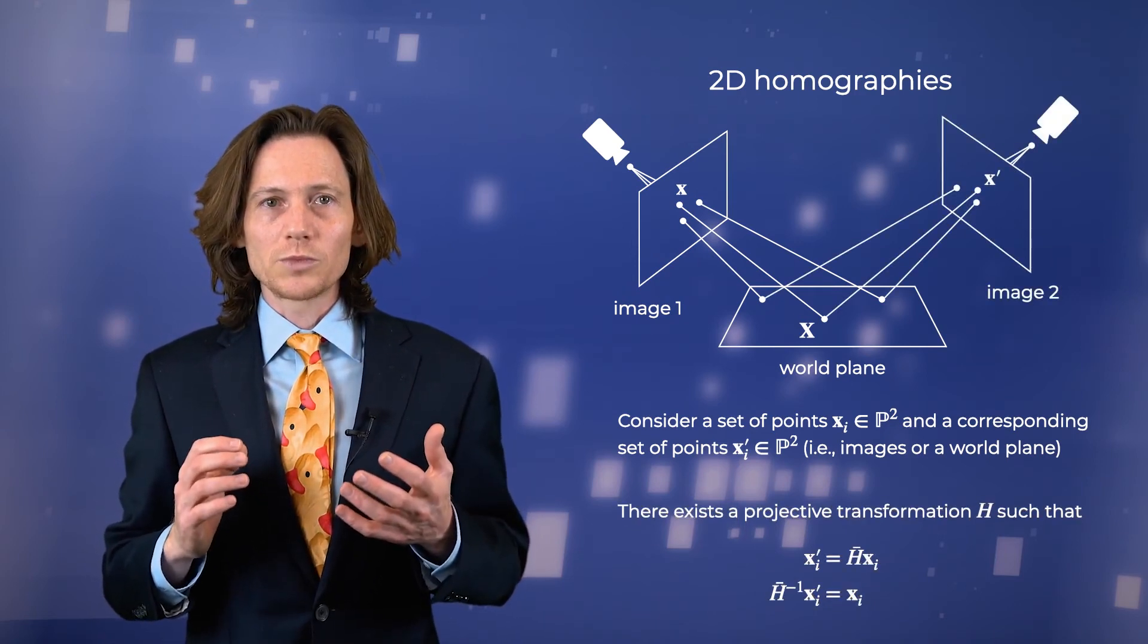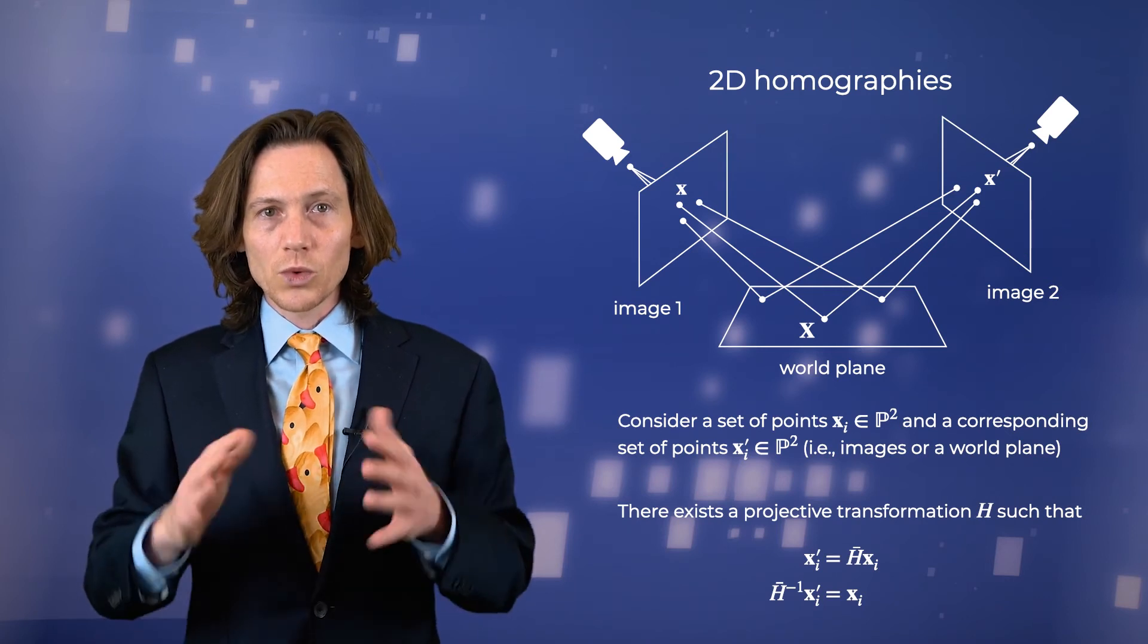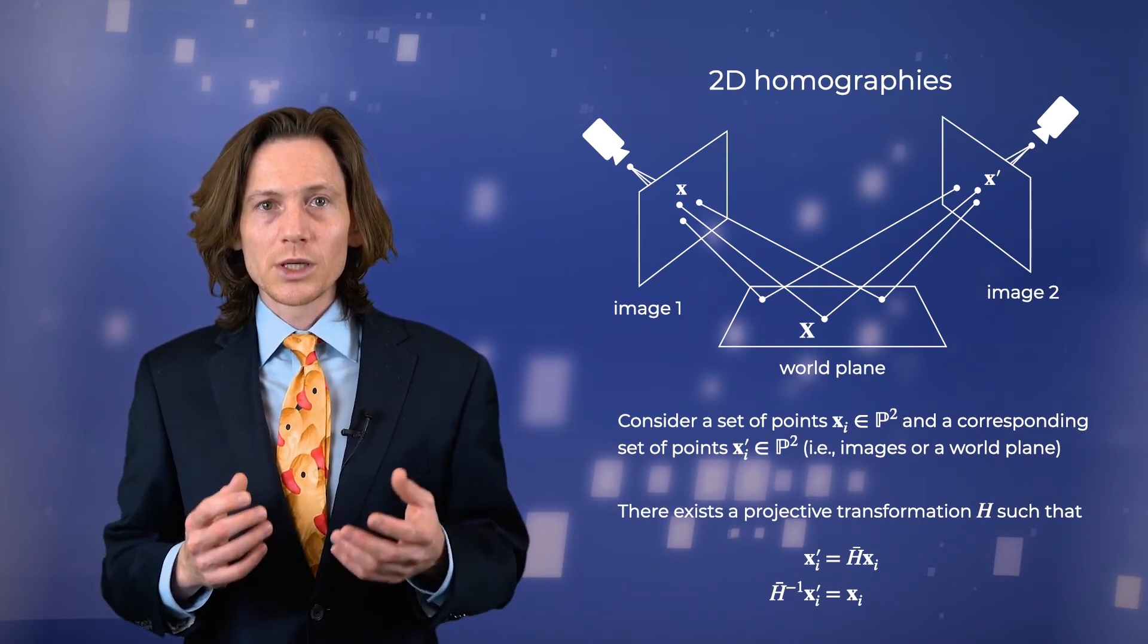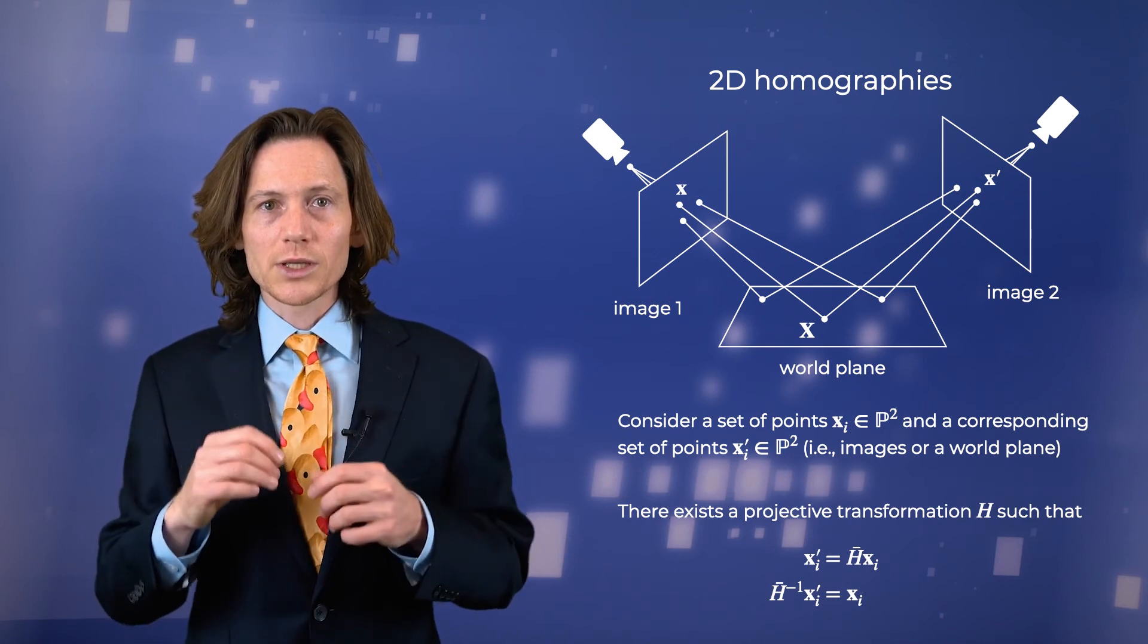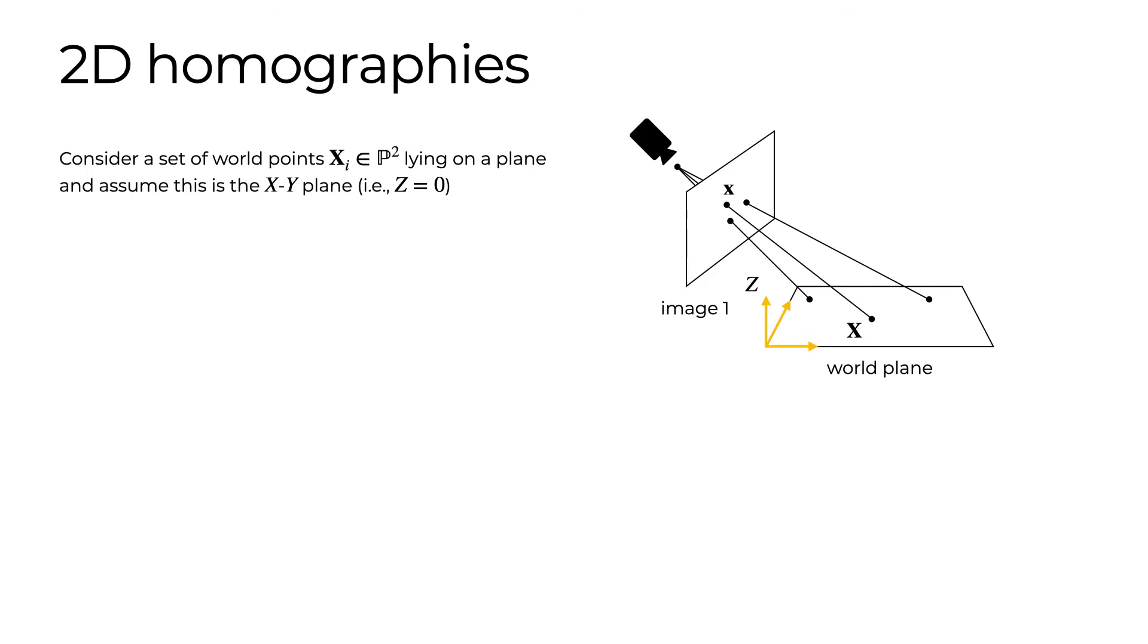Similarly, given a different image of the world plane, there exists another homography that provides an invertible transformation between the world plane and the new image. Composing these two homographies results in a homography that maps one image to the other. In order to see that such a transformation exists, suppose that we have a camera that images a set of points that lie on a common plane in the world. Without loss of generality, assume that this is the xy plane in the world coordinate system.